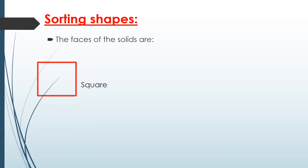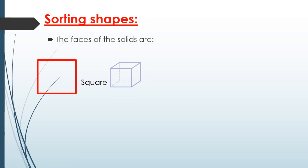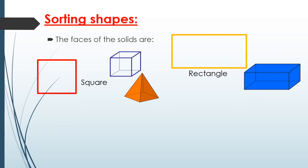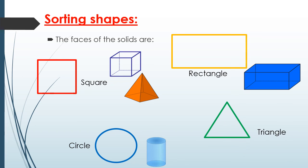If you want to sort some shapes, we sort them by the shape of their faces. A square can be found in the cube or the square base pyramid. A rectangle can be found in the rectangular prism. A circle can be found in the two circular bases of the cylinder. A triangle can be found in the four flat triangular faces of the square base pyramid.